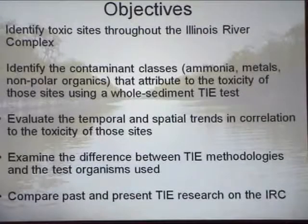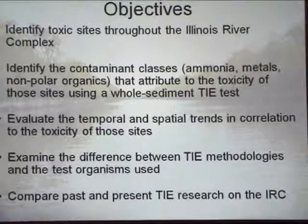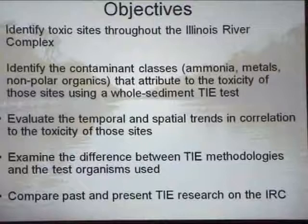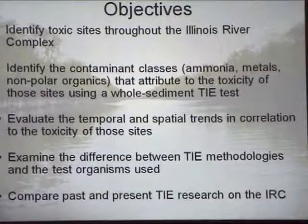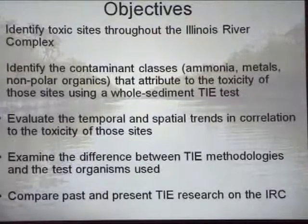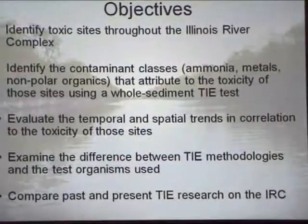Our objectives were to identify toxic sites throughout the Illinois River complex, identify the contaminant classes — ammonia, metals, or non-polar organics — using a whole sediment TIE, evaluate temporal and spatial trends in toxicity, compare and contrast the two TIE methodologies, and compare results to the work done by Onibor and others back in the early 90s.